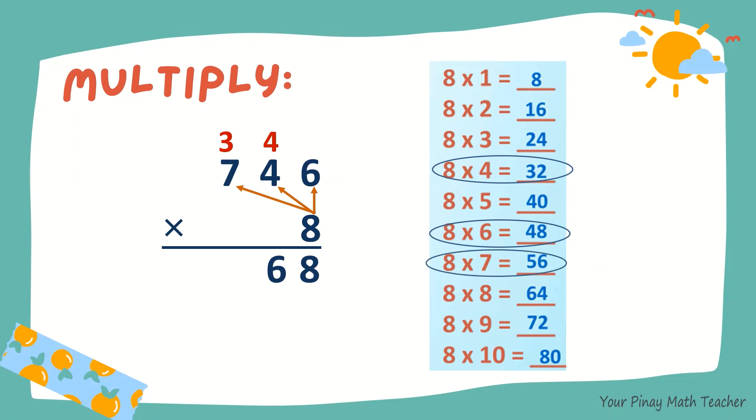8 times 7, 56. Plus 3, 59. 5,968 is the product of 746 and 8.